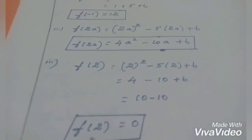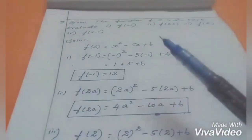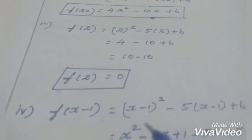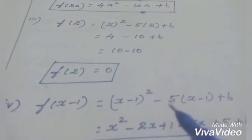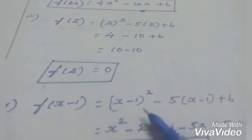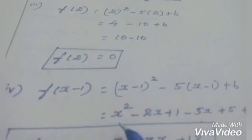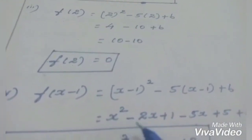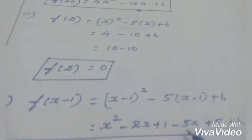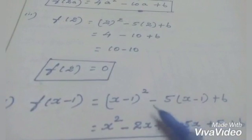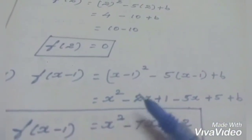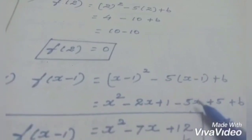For f(x-1), substitute x = (x-1): (x-1)² - 5(x-1) + 6. Using (a-b)² = a² - 2ab + b²: x² - 2x + 1 - 5x + 5 + 6. Combining like terms: x² - 7x + 12. So f(x-1) = x² - 7x + 12.